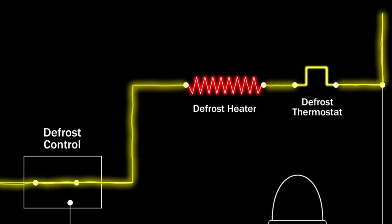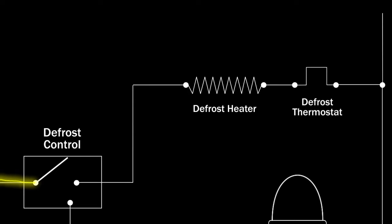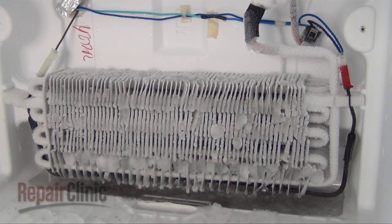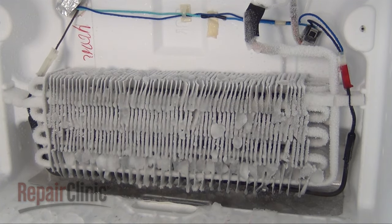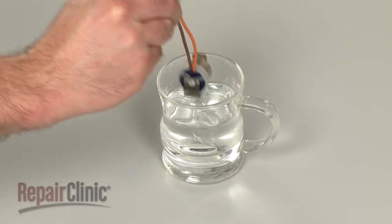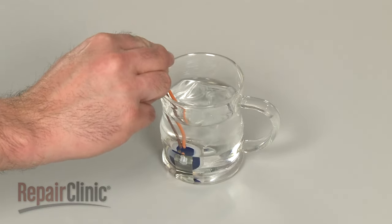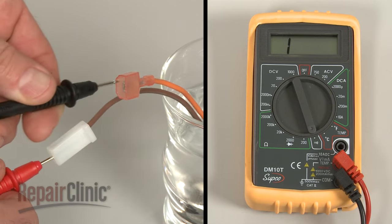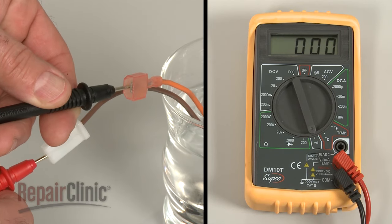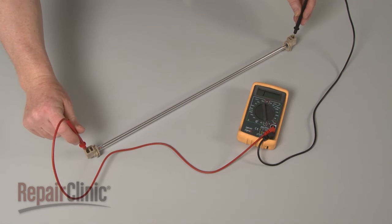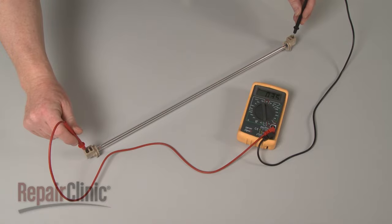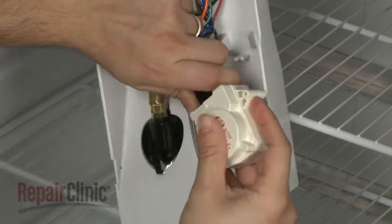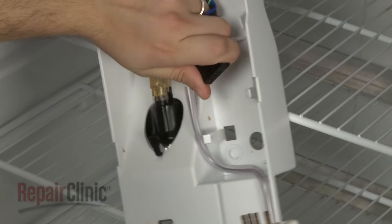If the control, thermostat, or heater fail, the evaporator coils will likely frost over, causing poor cooling in the refrigerator. You can test both the thermostat and heater for continuity to determine if a continuous electrical path is present. If both the thermostat and heater test positive for continuity, it's likely that the control is defective and will need to be replaced.